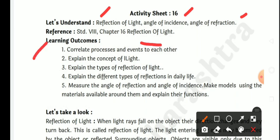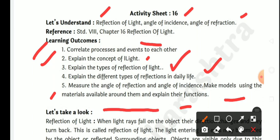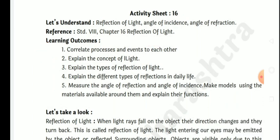Learning outcomes: co-relate the processes and events to each other; explain the concept of light; explain the types of reflection of light; explain different types of reflections in daily life; measure the angle of reflection and angle of incidence; make models using the material available around them and explain the functions.